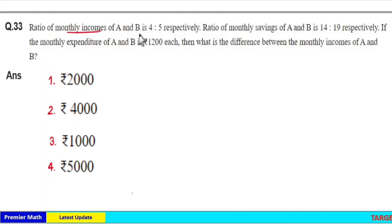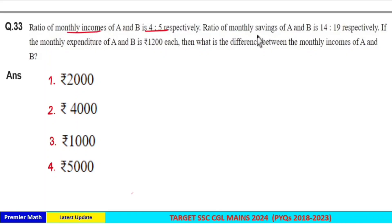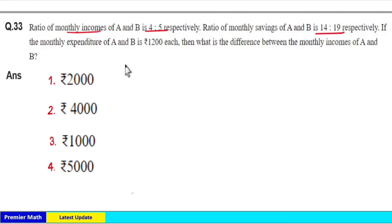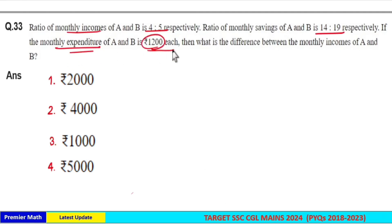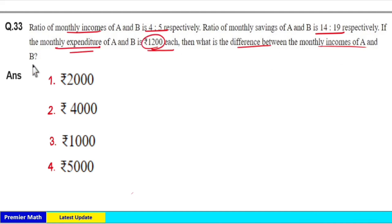The ratio of monthly incomes of A and B is 4:5 respectively, and the monthly savings of A and B is 14:19. If the monthly expenditure of A and B is 1200 each, then what is the difference between the monthly income of A and B?